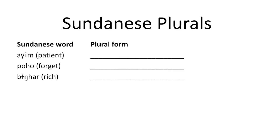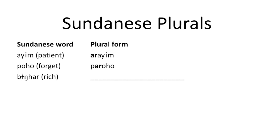Let's look at the puzzle bits. So, 'ayim' — there's no 'ar' there, and we saw that if a word began with a vowel, it was just 'ar' at the beginning. So that's easy: 'arayim'. 'Poho' (forget) is going to become 'paroho', because there's no 'ar' elsewhere in the word. But 'benghar' has an 'ar' at the end, so in this case we'll have the 'al' ending rather than the 'ar', and it'll be 'balenghar'.